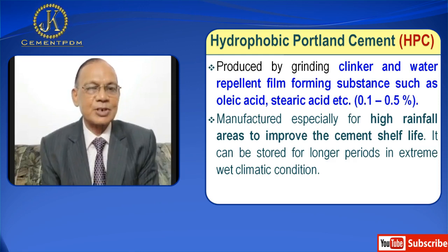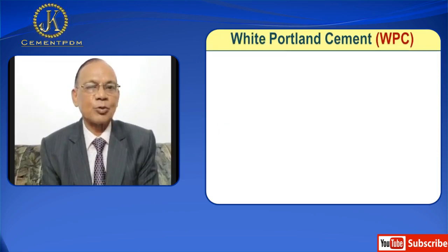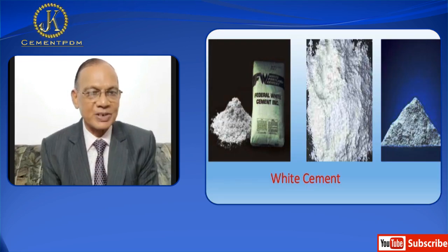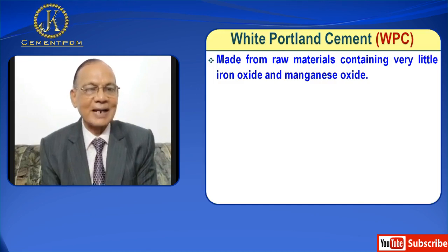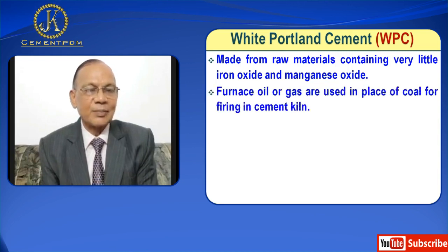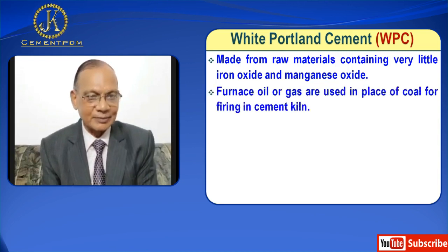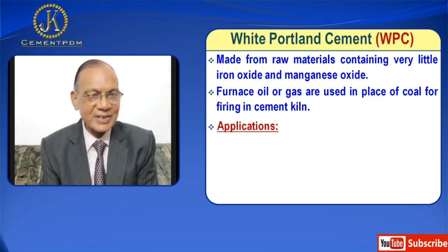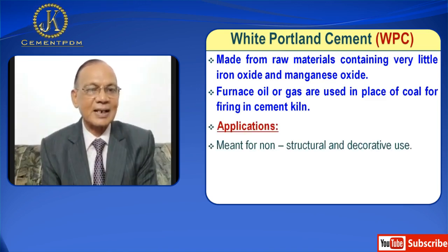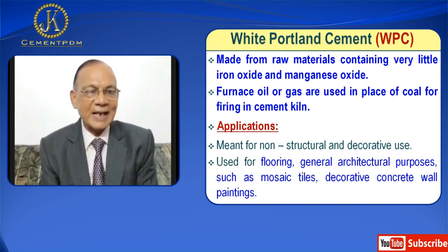Next is White Portland Cement, WPC. It is made from raw materials containing very little iron oxide and manganese oxide. Furnace oil or gas is used in place of coal for firing in the kiln. Applications: it is meant for non-structural and decorative use — used for flooring, general architectural purposes such as mosaic tiles, and decorative concrete wall painting.